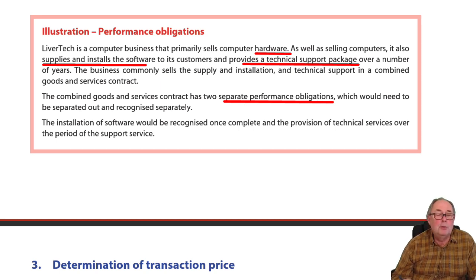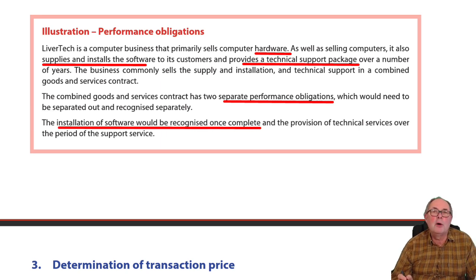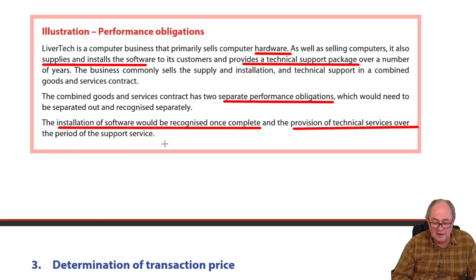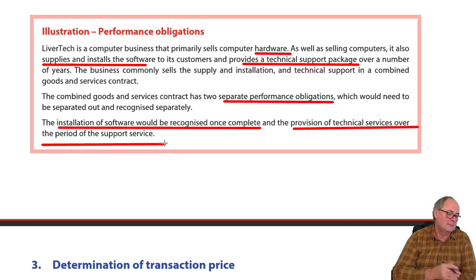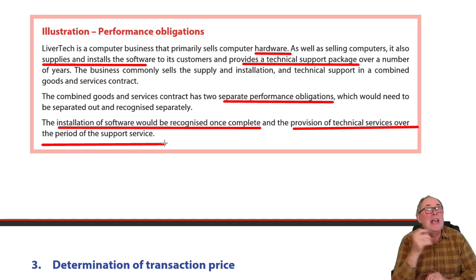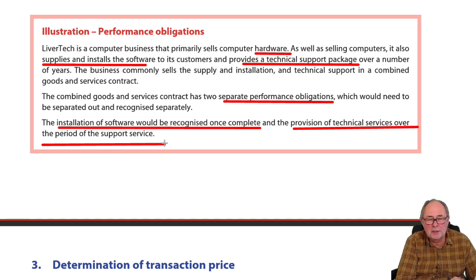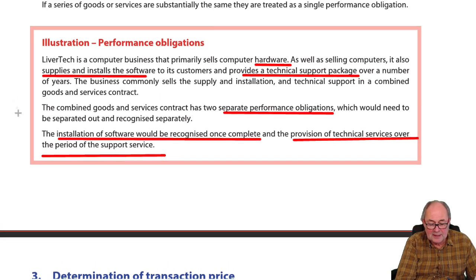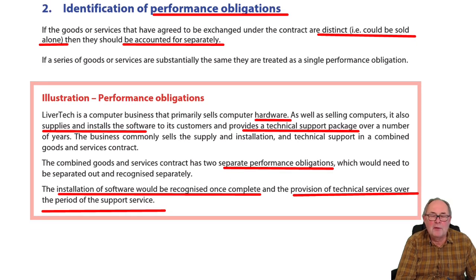So it might be that you wish to distinguish, for example, the installation of the software — recognize that once it's been installed — while the provision of services would be recognized over the period of the support service. A very common thing: you buy a TV and also a three-year guarantee from the seller. Those are separate performance obligations if separately sold, and the income from each should be recognized separately. Stage two: decide what the obligations are.